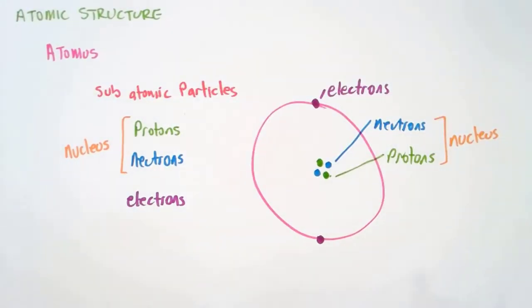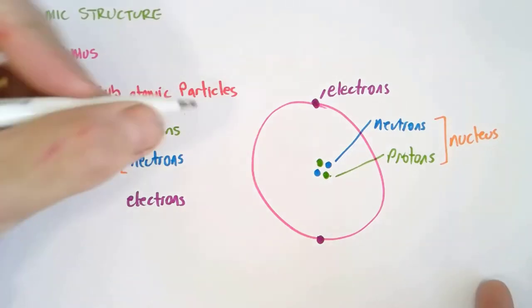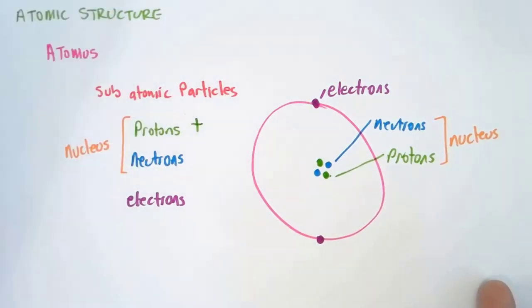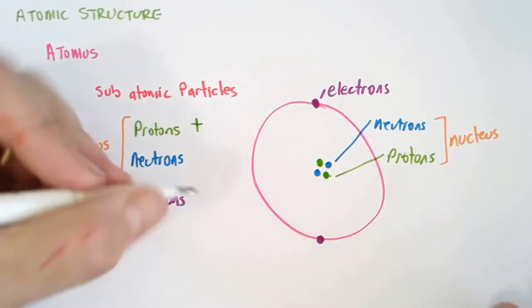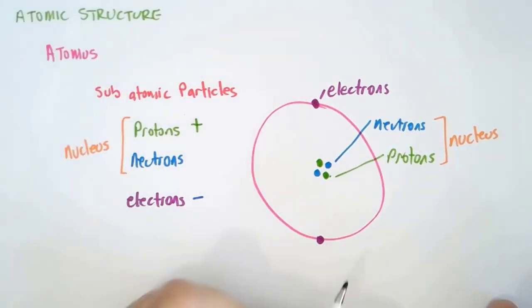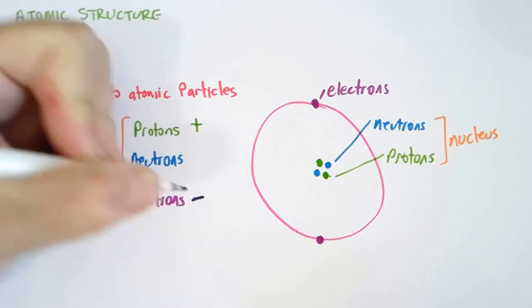Now the protons and electrons have an electric charge. Protons have a positive charge—proton positive, that's how I remember it. Electrons have a negative charge. We have the same number of electrons as we have protons in an atom. Therefore, overall there's no charge. It's neutral.